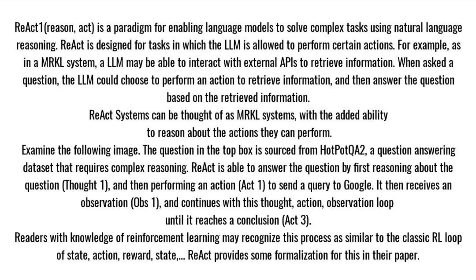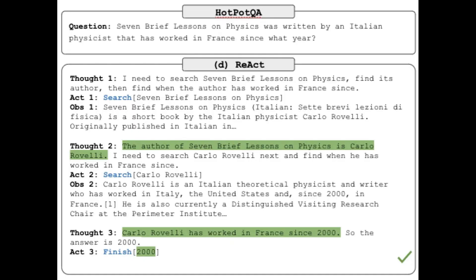ReAct is designed for tasks in which the LLM is allowed to perform certain actions. For example, as in a MRKL system, an LLM may be able to interact with external APIs to retrieve information. When asked a question, the LLM could choose to perform an action to retrieve information, and then answer the question based on the retrieved information. ReAct systems can be thought of as MRKL systems, with the added ability to reason about the actions they can perform.